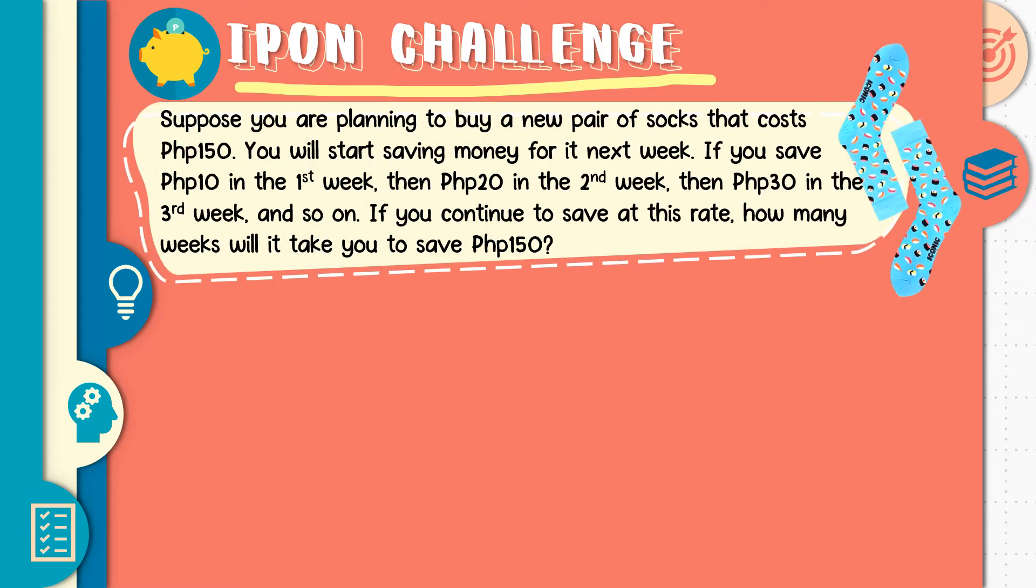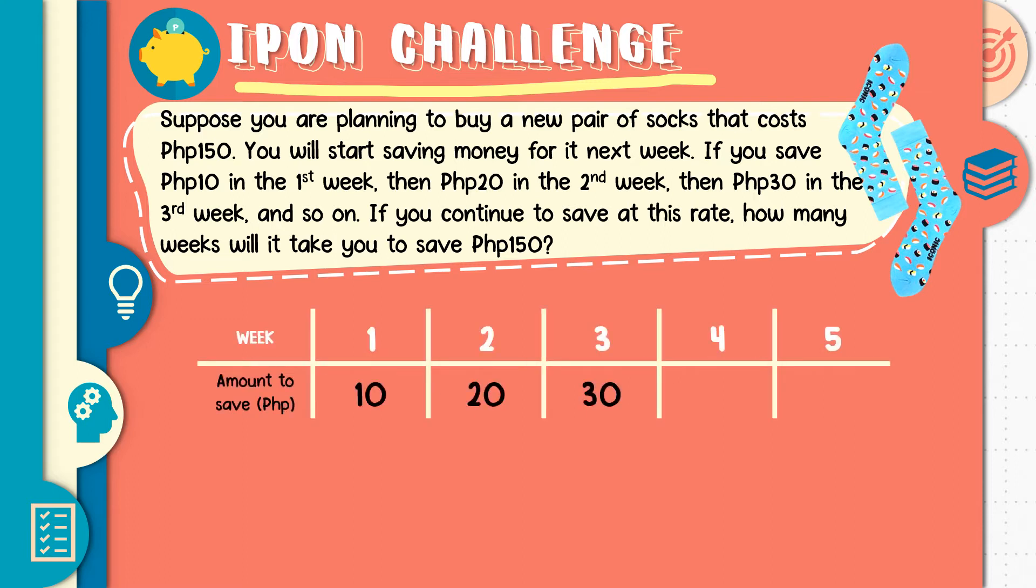This scenario, you are planning to buy a new pair of socks that cost 150 pesos. And your saving pattern will be this one. On the first week you are going to save 10 pesos. The second week is you have to save 20. The third is 30, 40, and so on and so forth. So anong sequence yung nabuo natin? We have 10, 20, 30, 40, and 50.